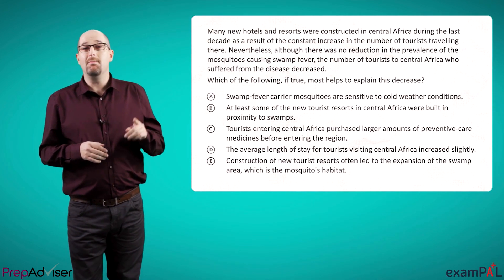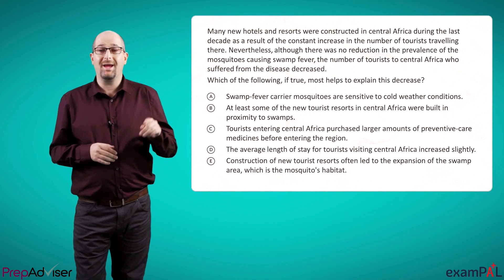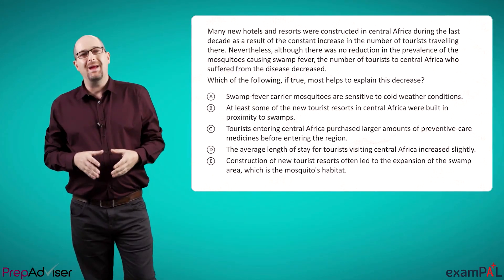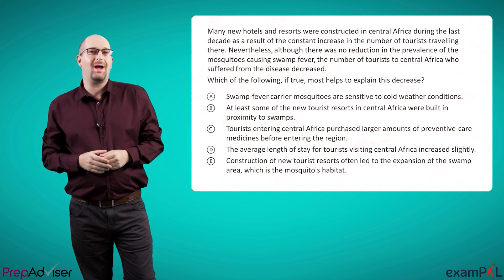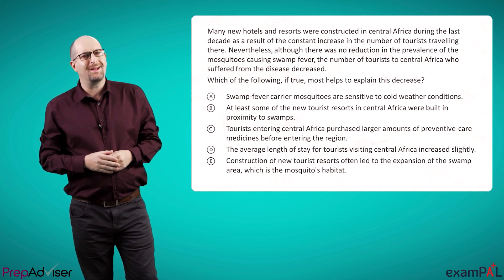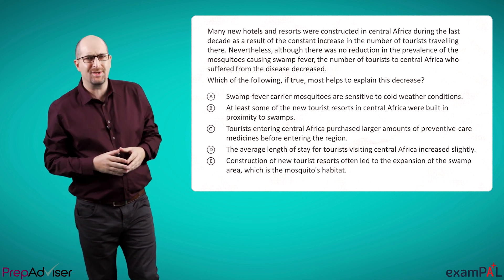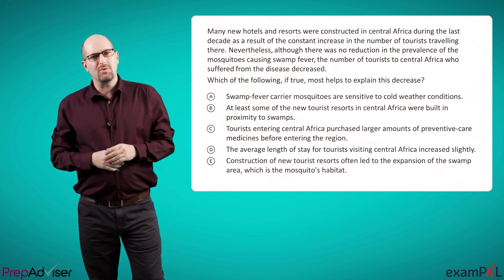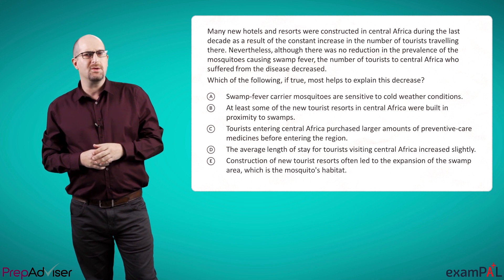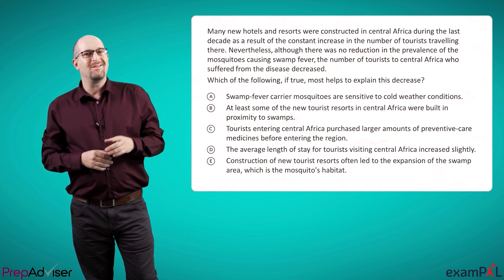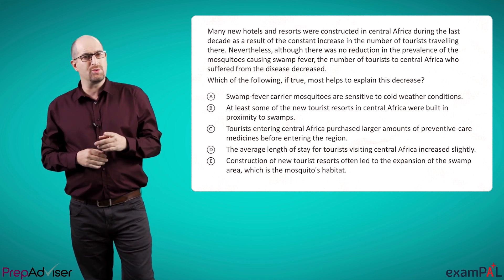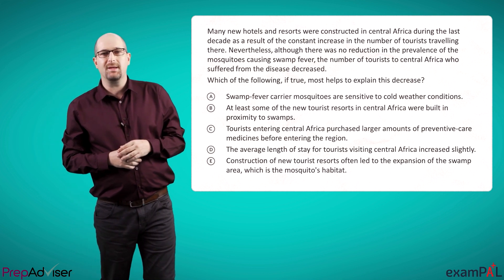Let's look at an example. You may want to pause the video and answer it. Many new hotels and resorts were constructed in central Africa during the last decade as a result of the constant increase in the number of tourists traveling there. Nevertheless, although there was no reduction in the prevalence of the mosquitoes causing swamp fever, the number of tourists to central Africa who suffered from the disease decreased. Which of the following, if true, most helps explain this decrease?